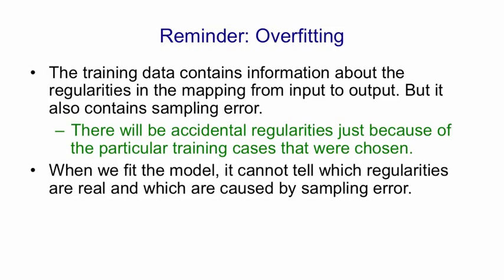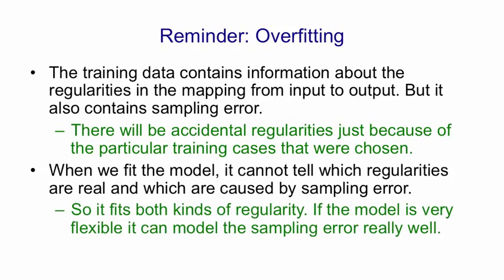So when we fit the model, it can't tell which of the regularities are real, and would also exist if we sampled the training set again, and which are caused by the sampling error. So the model fits both kinds of regularity, and if the model's too flexible, it'll fit the sampling error really well, and then it'll generalize badly. So we need a way to prevent this overfitting.